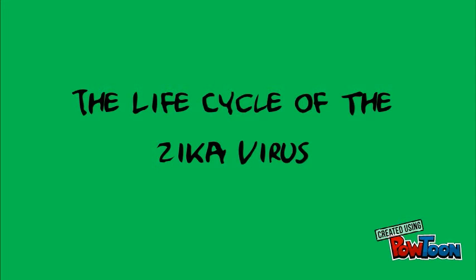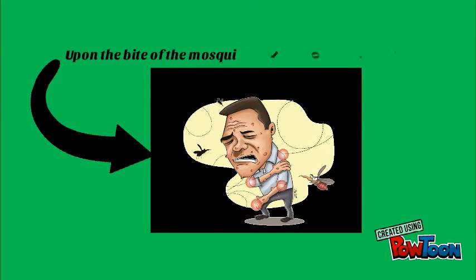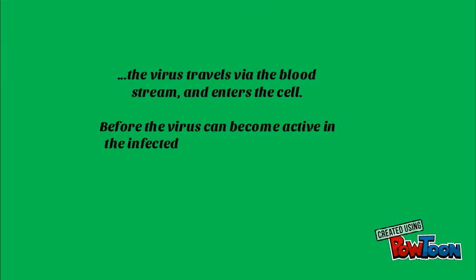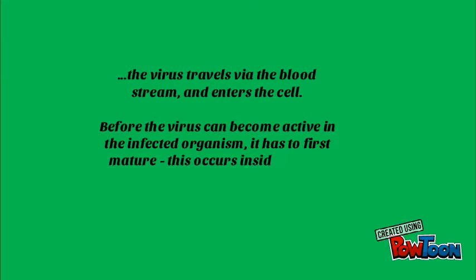The Life Cycle of the Zika Virus. Upon the bite of the mosquito, the virus travels by the bloodstream and enters the cell. Before the virus can become active in the infected organism, it has to first mature, and this occurs inside the cell.